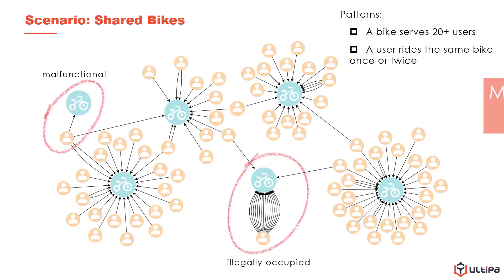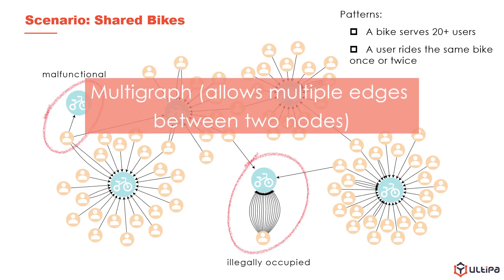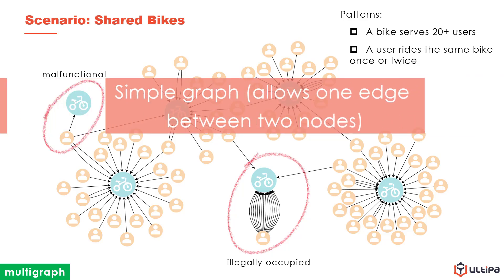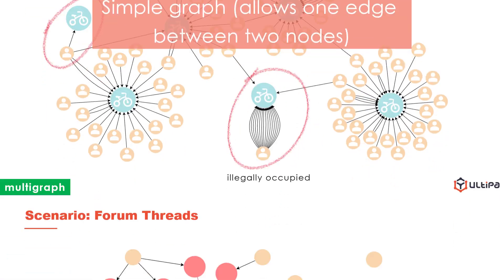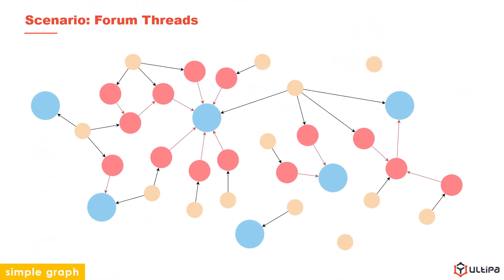A graph where multiple edges are allowed between two nodes is a multi-graph. The graph in this slide is a multi-graph. A graph where only one edge is allowed for one pair of nodes is a simple graph. This is an example of a simple graph, showing the structure of forum threads.